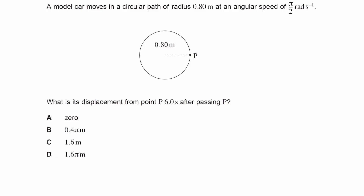A model car moves in a circular path of radius 0.8 meters at an angular speed of pi over 2 radians per second. What is its displacement from point P, 6 seconds after passing P?